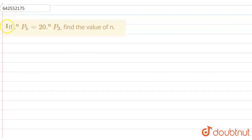Hello everyone, so the question given is, if NP5 is equal to 20 into NP3, find the value of N.